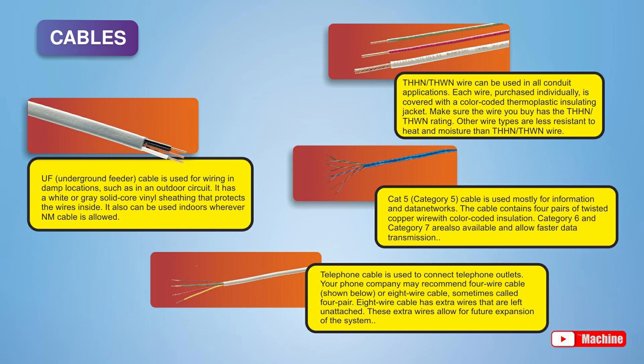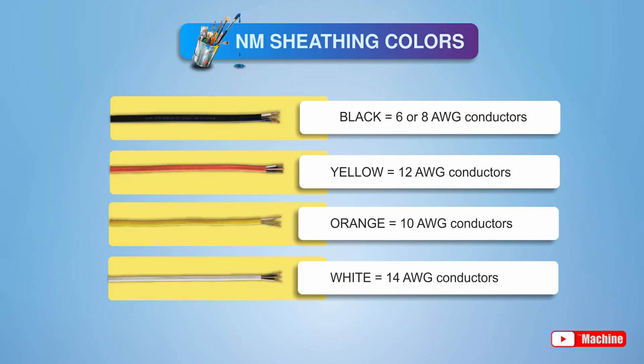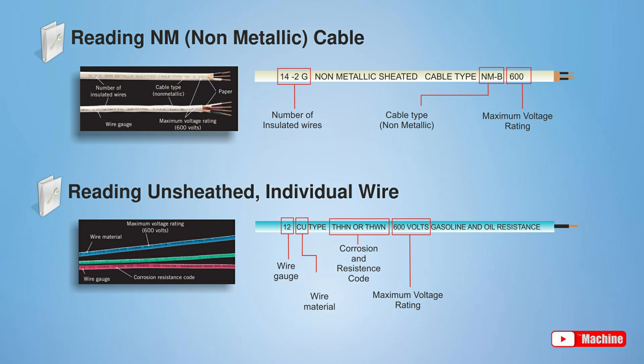Telephone cable is used to connect telephone outlets. The PVC sheathing for non-metallic cable is coded by color, so wiring inspectors can tell what the capacity of the cable is at a glance. Non-metallic cable is labeled with the number of insulated wires it contains; the bare grounding wire is not counted. Unsheathed individual wires are used for conduit and raceway installations. Wire insulation is coded with letters to indicate resistance to moisture, heat, and gas or oil.